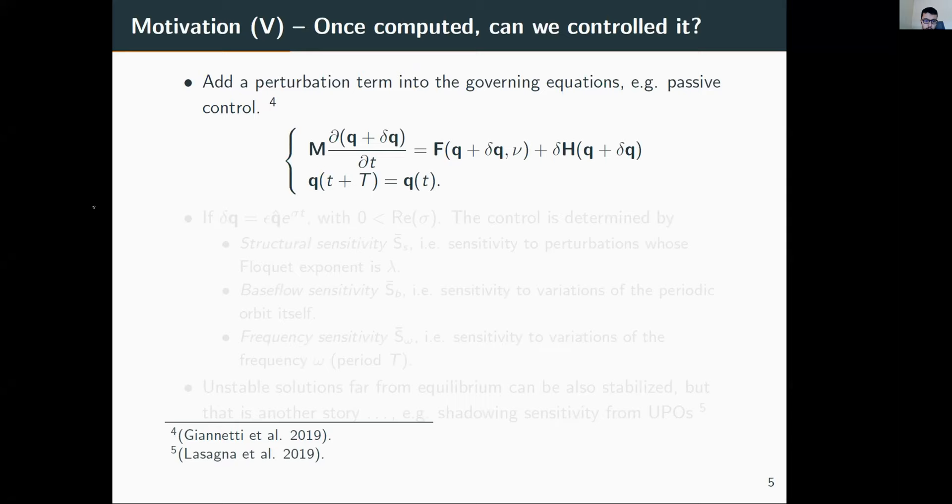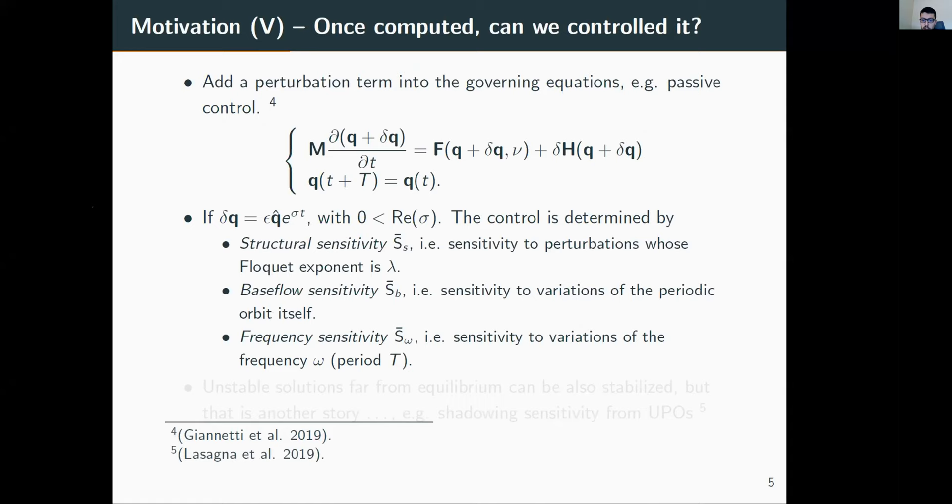To finalize the motivation, a matter of scientific and engineering interest is the capacity to control periodic orbits near secondary instability—for instance, the transition from periodic to quasi-periodic motion. This is possible by passive control through introduction of force feedback, denoted as delta H. Near the secondary instability, the sensitivity maps include base flow sensitivity and structural sensitivity. This is possible also far from equilibrium but is more complex than computing a single periodic orbit.